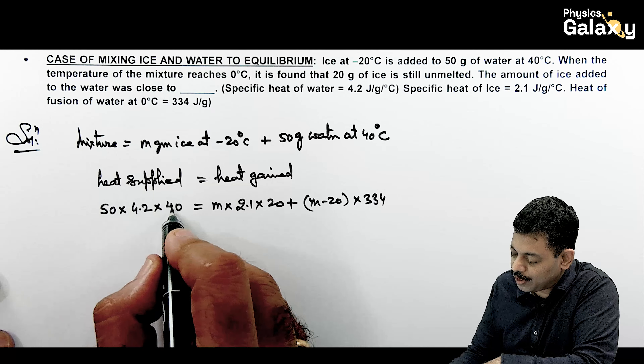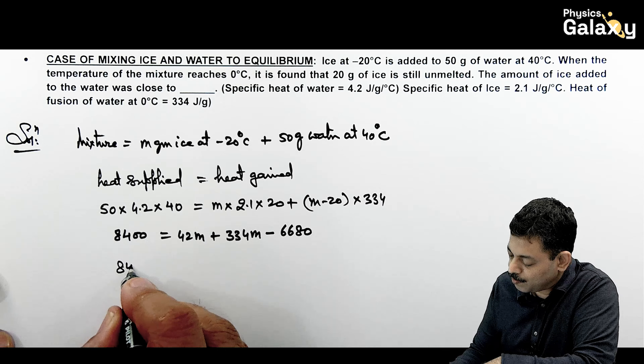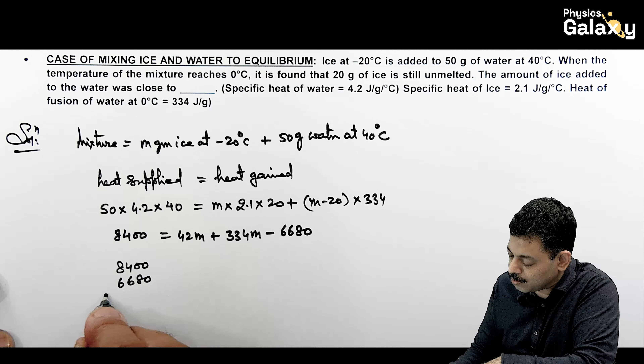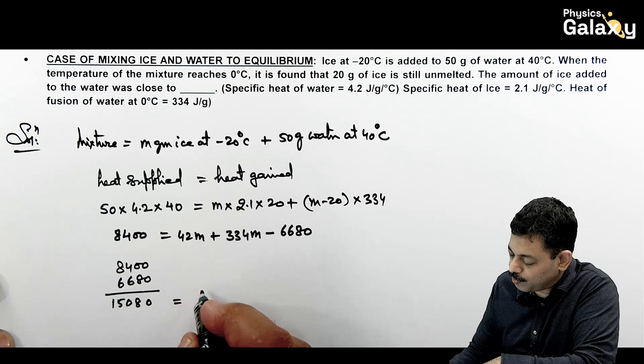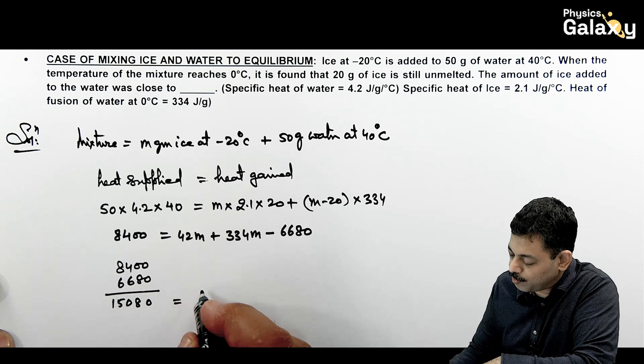Solving: 50 × 40 × 4.2 = 8400 J equals 42m + 334m − 6680. Bringing 6680 to the other side: 8400 + 6680 = 376m, so 15080 = 376m. Therefore m = 15080/376 gram. That is the initial mass of ice added.